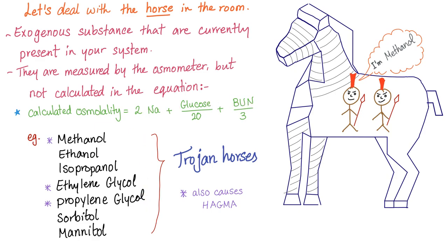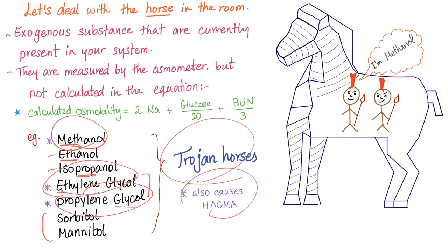The exogenous substances that cause an elevated osmolar gap — measured by the osmometer but not included in the equation — are: methanol, ethanol, isopropanol, ethylene glycol, propylene glycol, sorbitol, and mannitol. To memorize them, recall organic chemistry prefixes: meth, eth, prop — giving methanol, ethanol, isopropanol. Then two glycols: ethylene glycol and propylene glycol. And two sugars: sorbitol and mannitol. Importantly, three of these — methanol, ethylene glycol, and propylene glycol — also cause a high anion gap metabolic acidosis. So these three substances increase both the osmolar gap and the anion gap. Very important for your test.